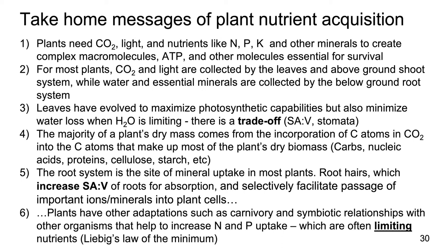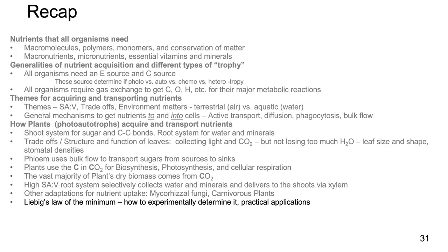To recap this lecture series: we've covered all the nutrients organisms need, discussed generalities of nutrient acquisition and different types of trophy, talked about acquiring and transporting nutrients, and covered how plants acquire and transport nutrients. Finally, we ended on Liebig's Law of the Minimum — how you can experimentally determine it by adding different nutrients piecewise and seeing how they influence growth, and some practical applications including maximizing plant growth and yields. Up next, we'll talk about how fungi and animals acquire and transport nutrients.